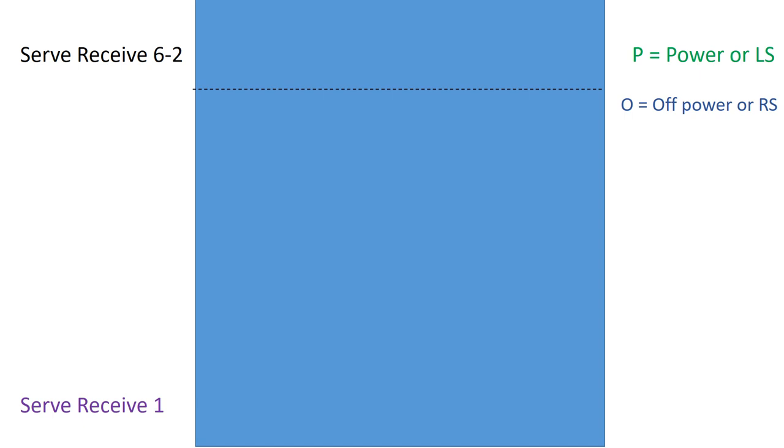We're going to have three different rotations we're going to investigate. You can start any of these three. This one doesn't have to be the first one. It's your discretion. A couple of terms: P for power, also known as the left side, and O for off power or right side.